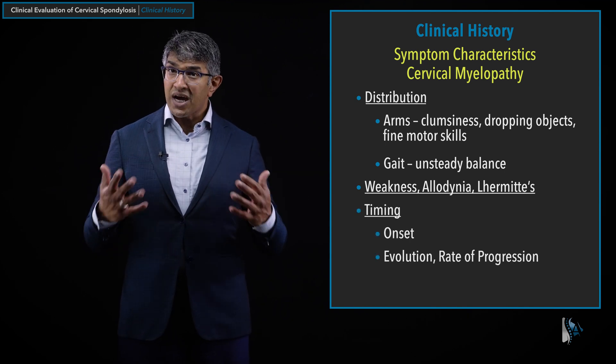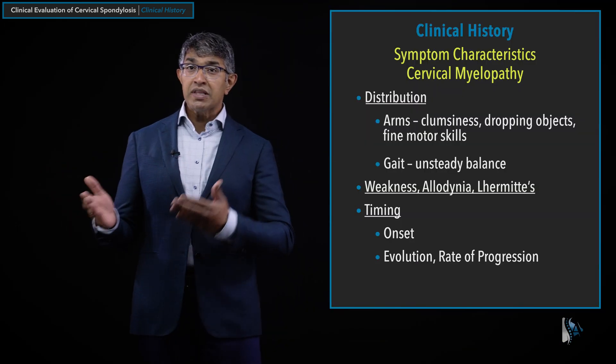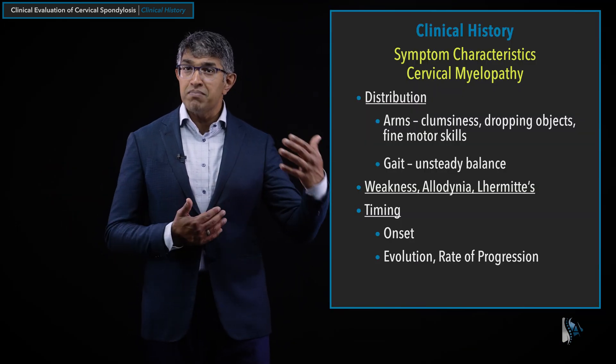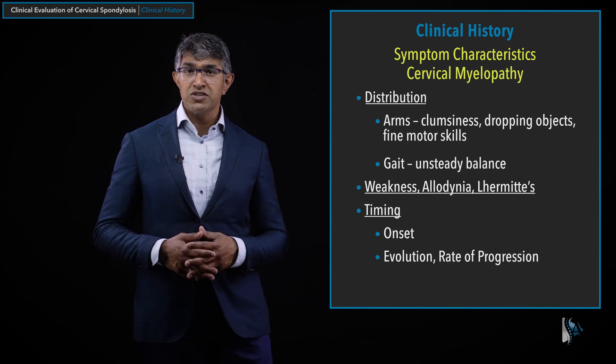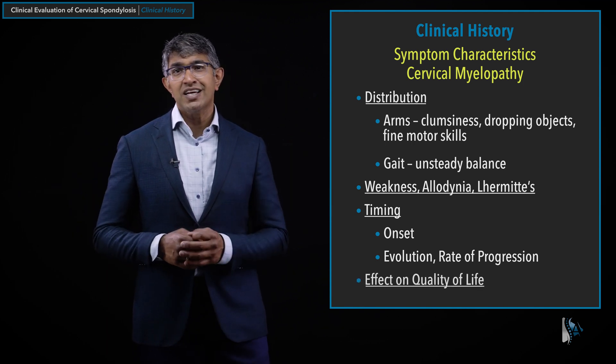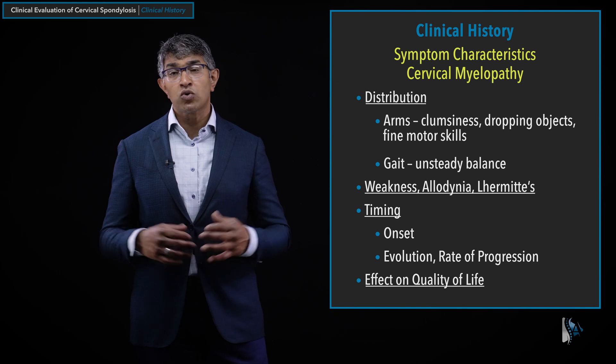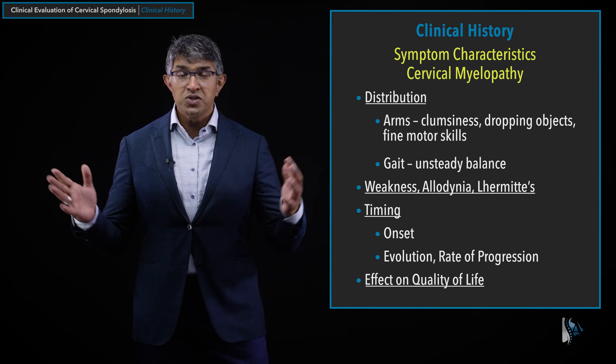We also talk about the timing of these symptoms: how long have they been present and how quickly are they progressing? If it's rapidly progressive, it changes the management and timing of how quickly you want to act. Finally, I ask how much these symptoms are affecting quality of life — sometimes even a little can be very disruptive if their job depends on dexterity, while others may have mild clumsiness that doesn't affect them significantly.